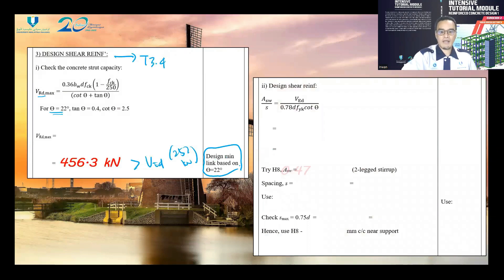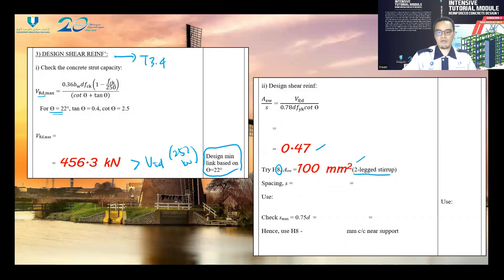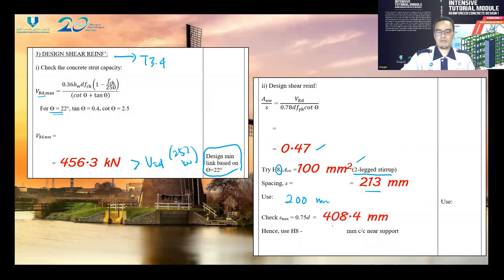The design shear reinforcement ratio Asw/s is equal to 0.47. Using a link diameter of 8 millimeters, Asw is equal to 100 millimeter square due to two legs of stirrup, giving a spacing of 213 millimeters as the limit spacing. We can propose a lower value of 200 millimeters. Checking S maximum, which is equal to 408.4 millimeters, we can use H8 at 200 millimeters center-to-center near the support.